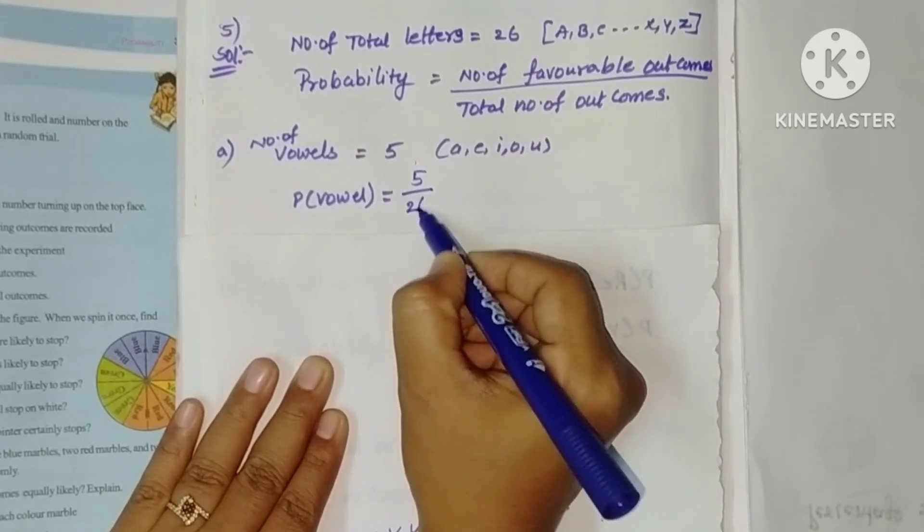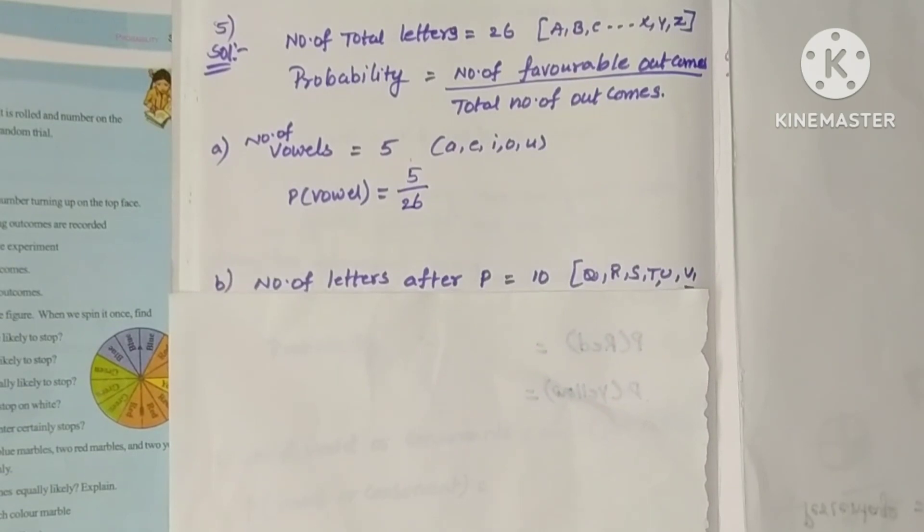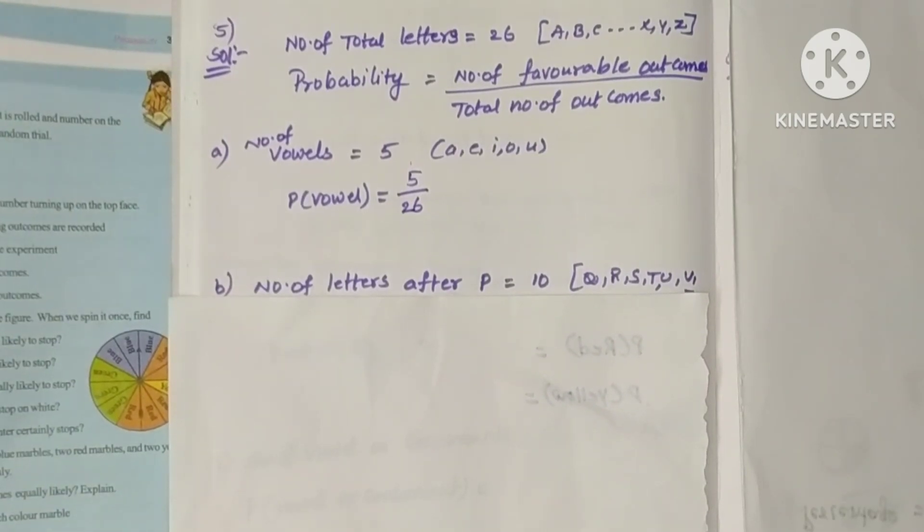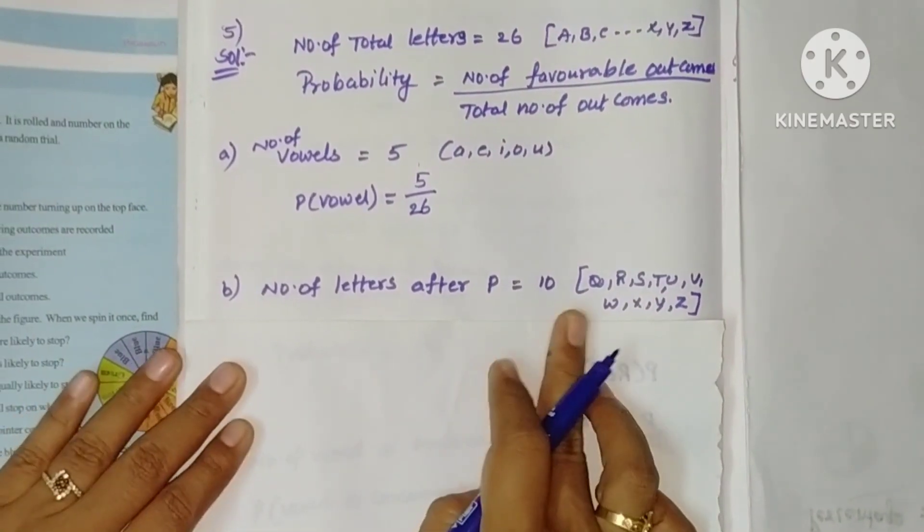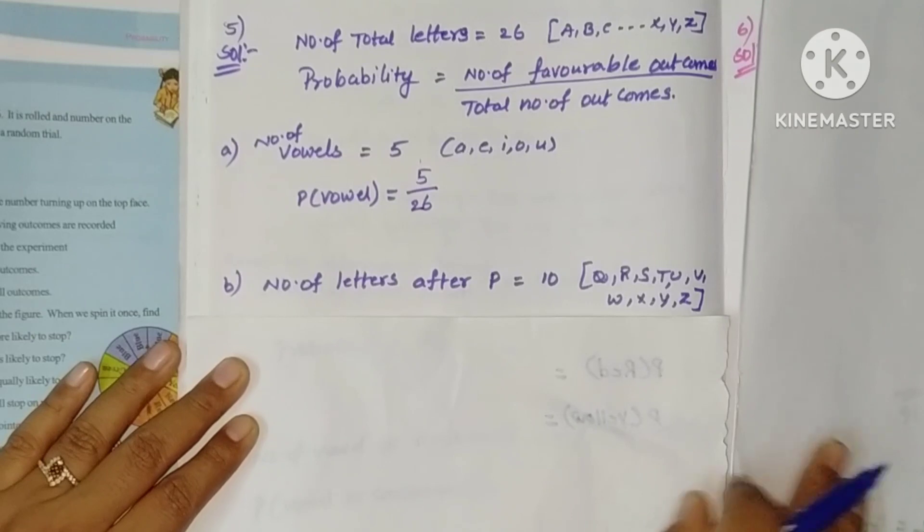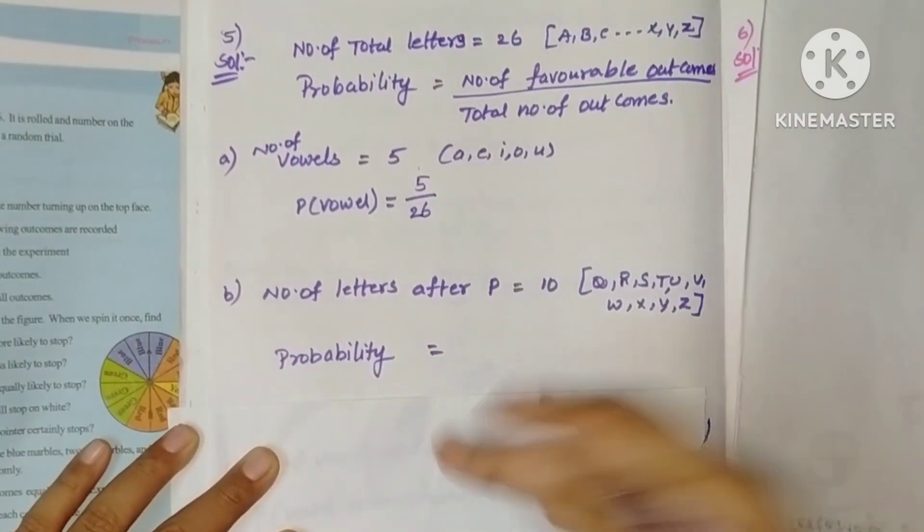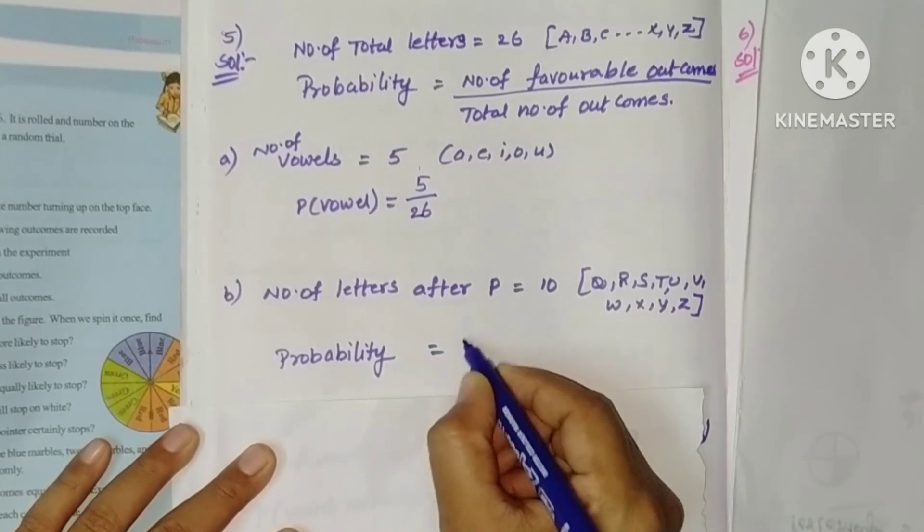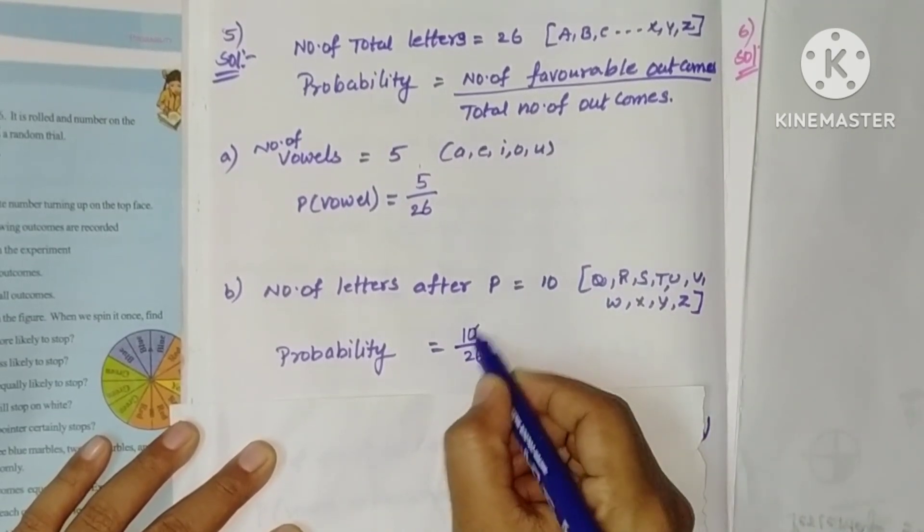Next, a letter comes after P. Number of letters after P is 10. So probability of letters after P is simply 10 by 26. You can cancel here.